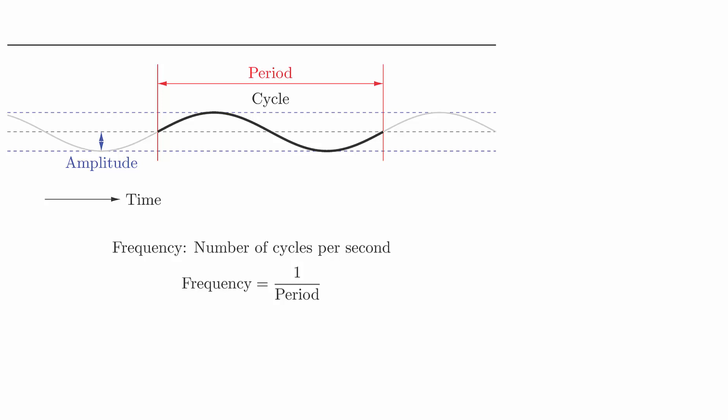This should make sense intuitively. If the period is very small, then you have many cycles per second. And if the period is very long, you should have a small number of cycles per second.